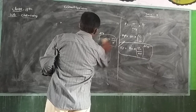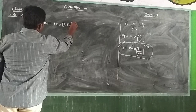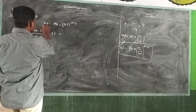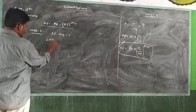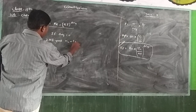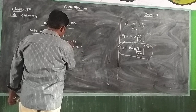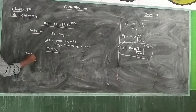Recall the Kp and Kc relation: Kp equals Kc·(RT)^ΔNg. Case 1: if ΔNg equals 0. For example, the reaction 2HI ⇌ H2 + I2 — products minus reactants equals 2 minus 2 equals 0 — so Kp equals Kc.